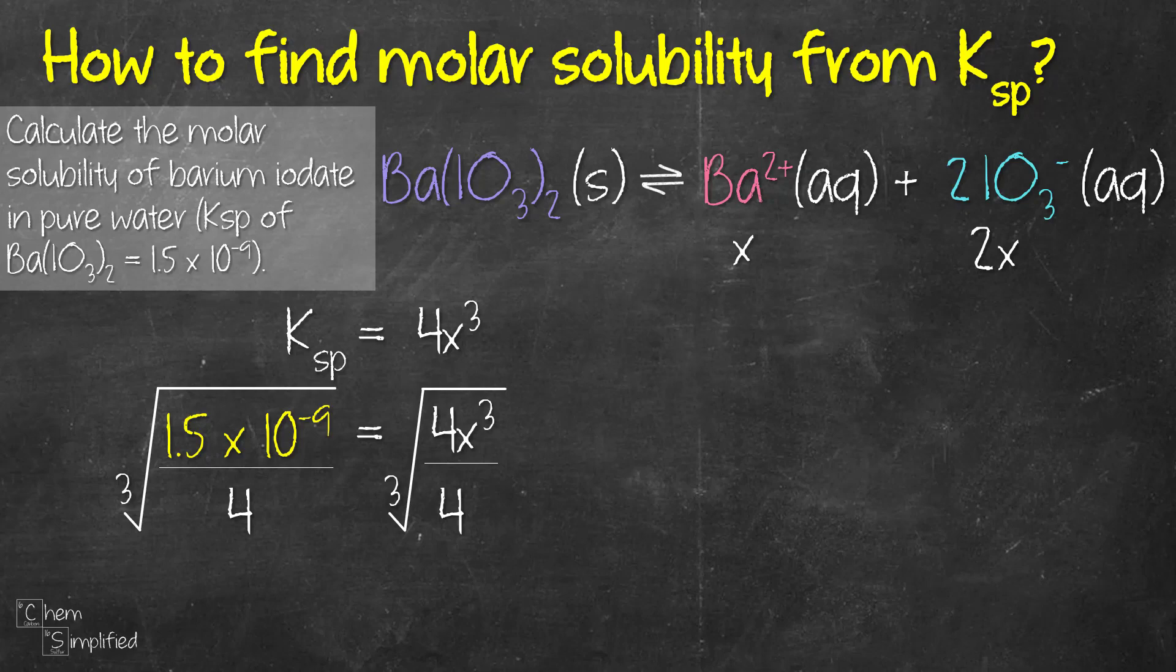If you don't know how to do a cube root, you just raise it to the power of 1 over 3 and that's going to give us 7.2 times 10 to the power of negative 4. That is x.